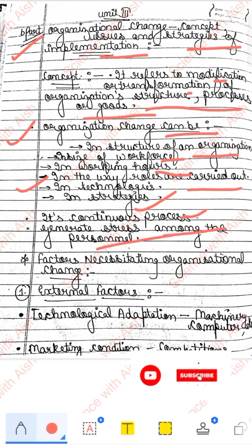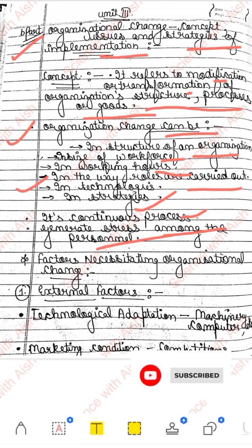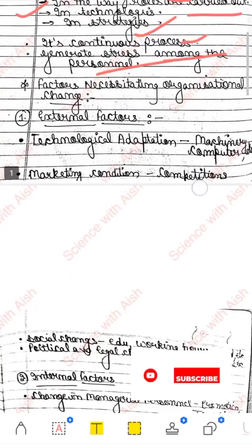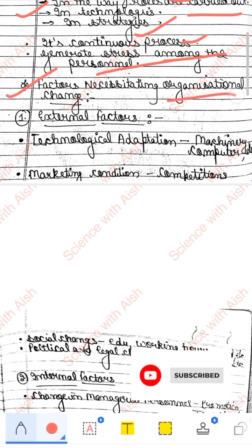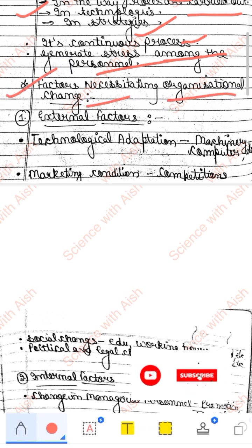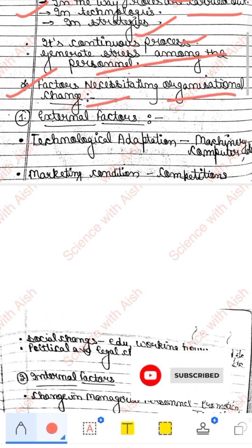These changes generate stress among the personnel — jo employees kaam karthi hain, unpar thoda stress aa jaata hai ek dam se jab koi nayi cheez introduce hoti hai. Ab dekhte hain factors necessitating organizational change — kaun se factors hain jinki wajah se organizational change karna padta hai. Pehle hain external factors.